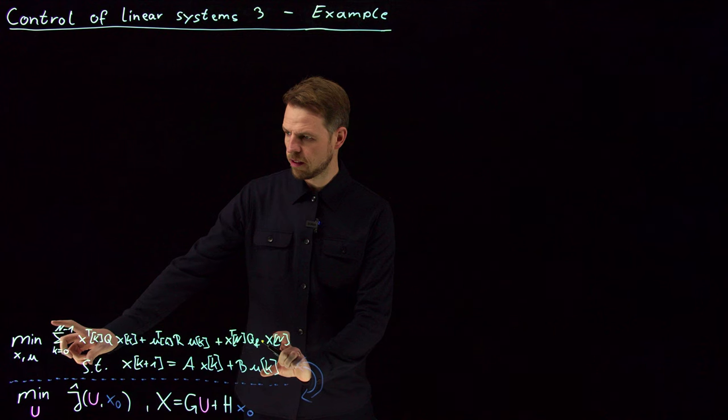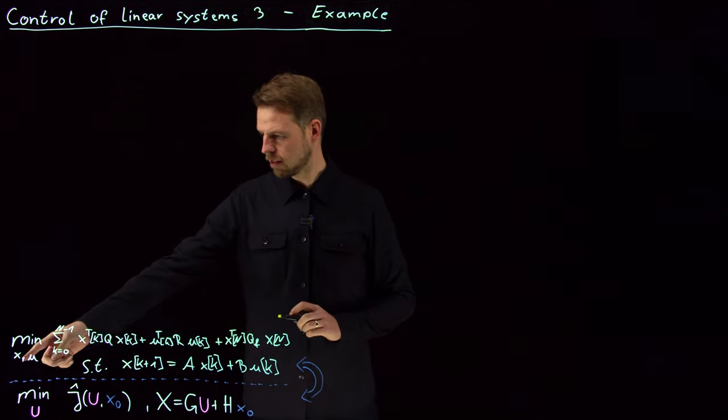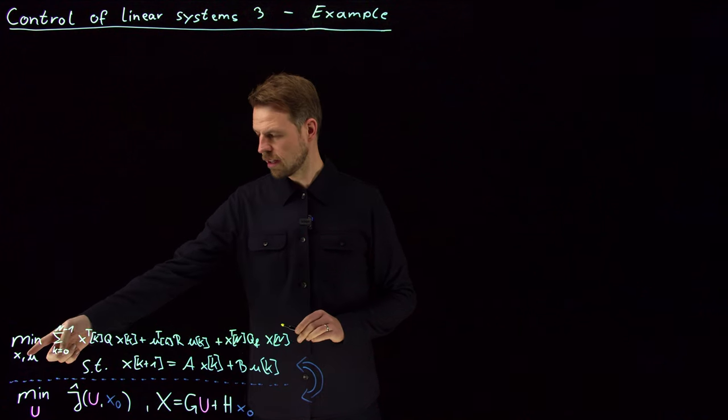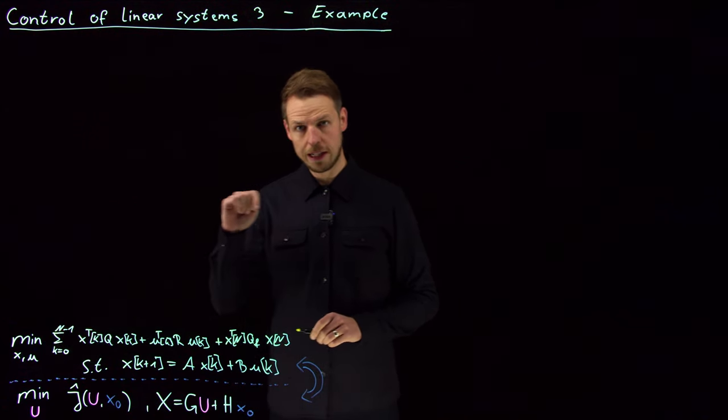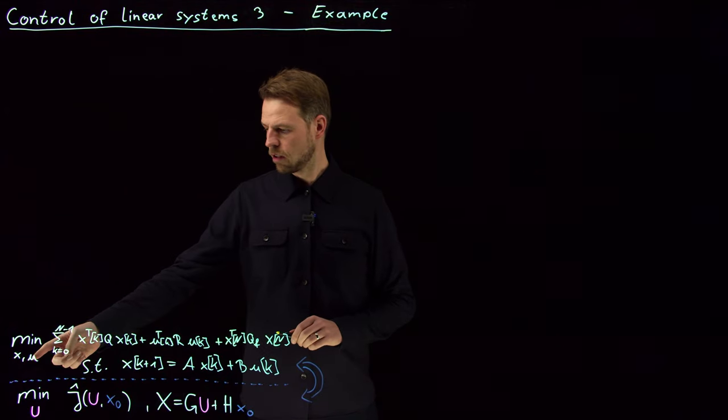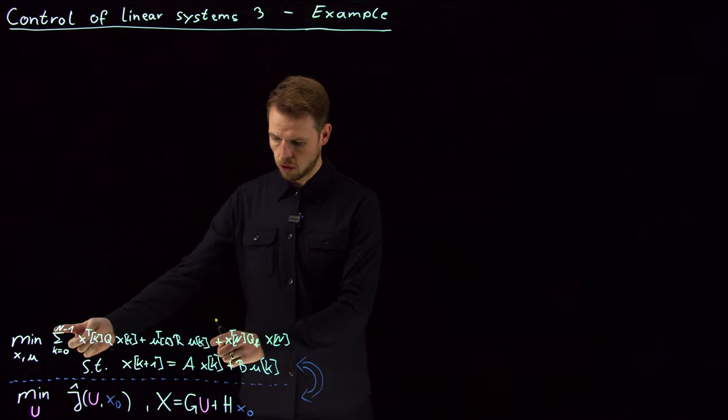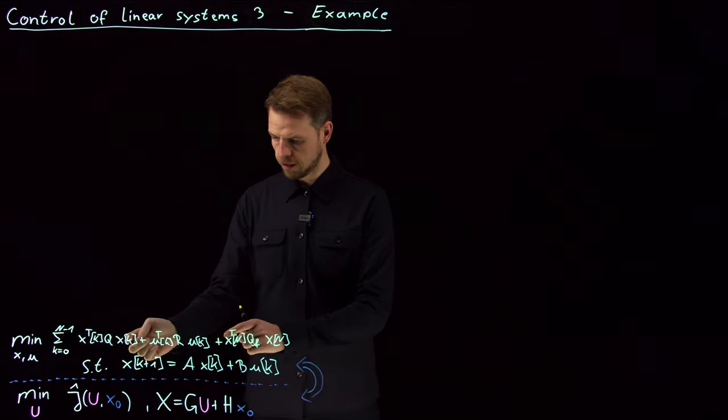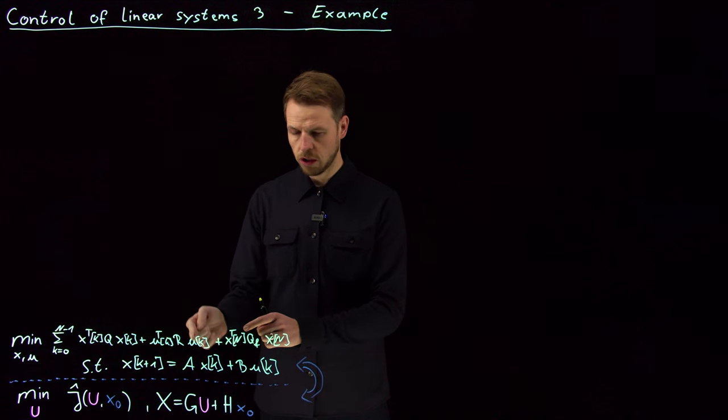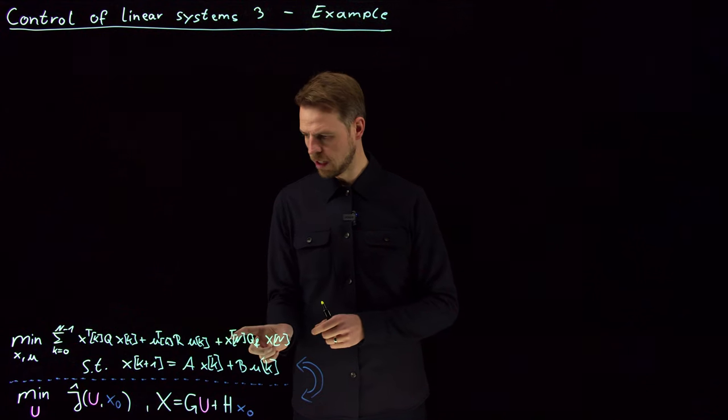What we started with was this upper two rows, this control problem where we want to find x, small x, which means the state dimension lower case n at N different capital N different time steps and the associated control input. So we had this task: minimize over x_k Q x plus u R u, so quadratic term in x, quadratic term in u, and then this terminal cost on the state.